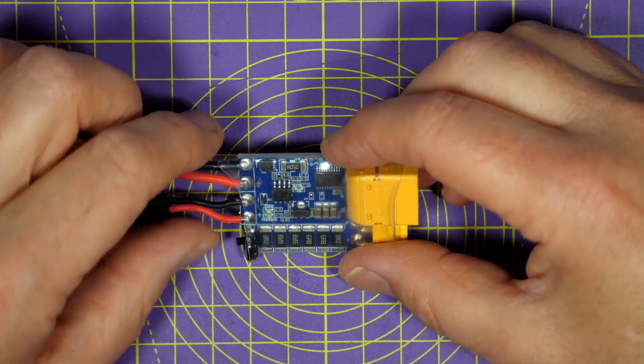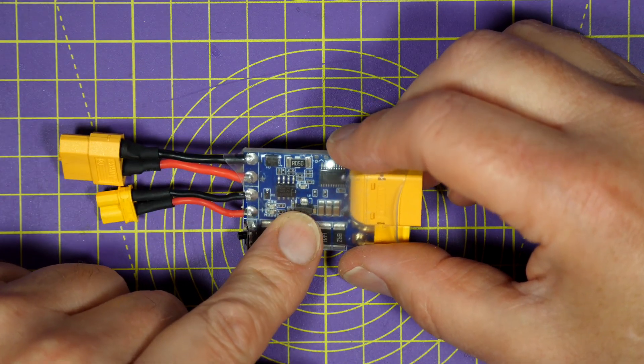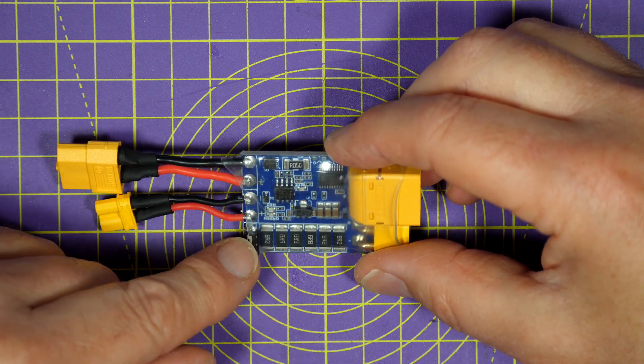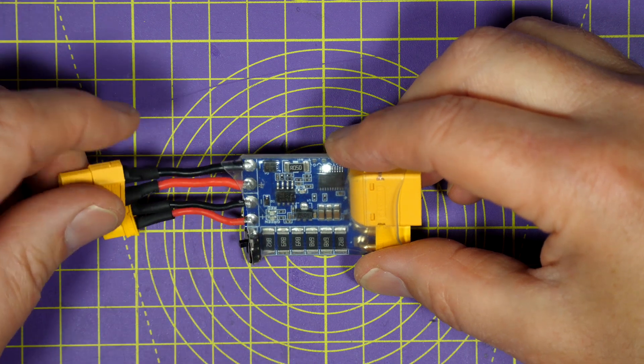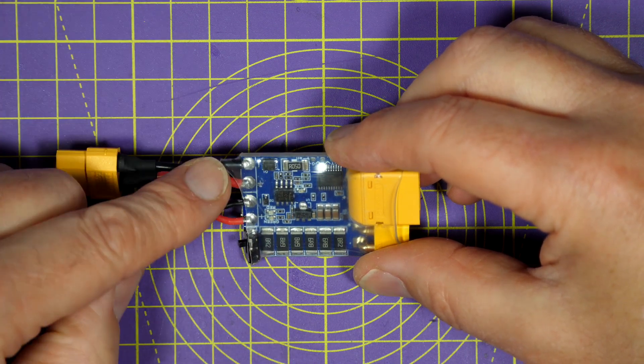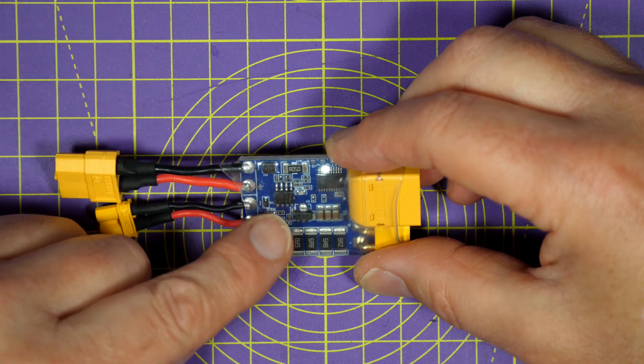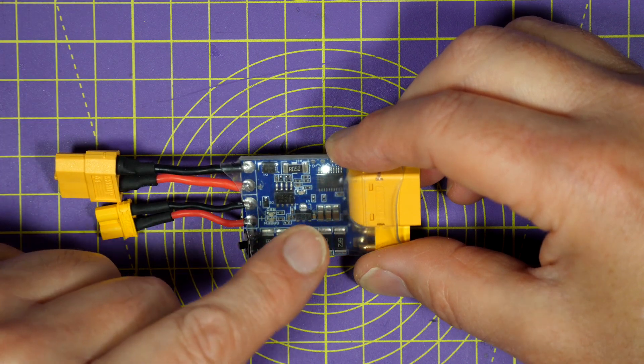So how much is it? Well it's surprisingly cheap at around $12 or £10. And if you think about it a smoke stopper is probably going to cost you maybe half of that for a couple of XT connectors, some wire and a car bulb, and of course your time to build it. So I think it's pretty good value for money because it does a whole lot more.